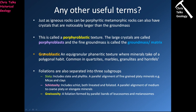Another commonly used term is granoblastic, which essentially means equigranular - the crystals in the rock are all the same size. It's very commonly associated with rocks like quartzites, marbles, granulites, and hornfelses. Looking at these rocks carefully, most crystals will be pretty much the same size, so you'd refer to them as a granoblastic quartzite, granoblastic marble, or granoblastic granulite.